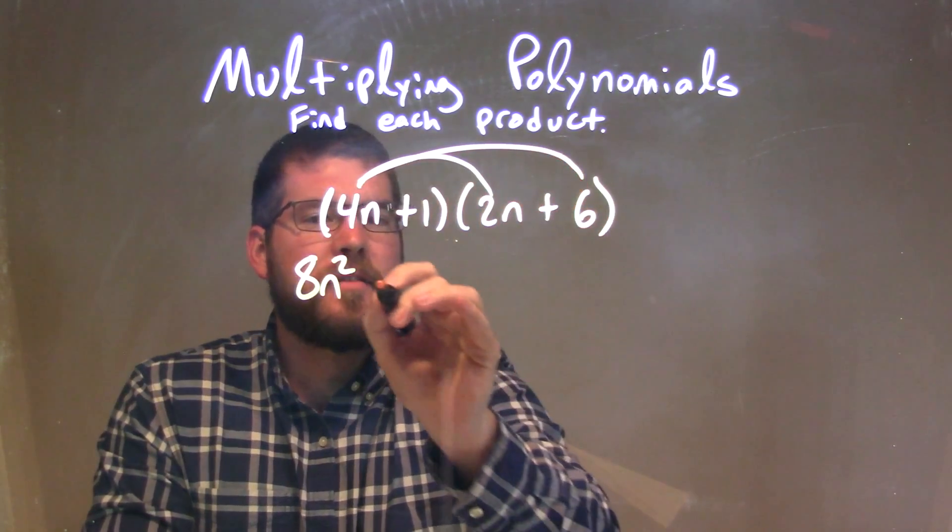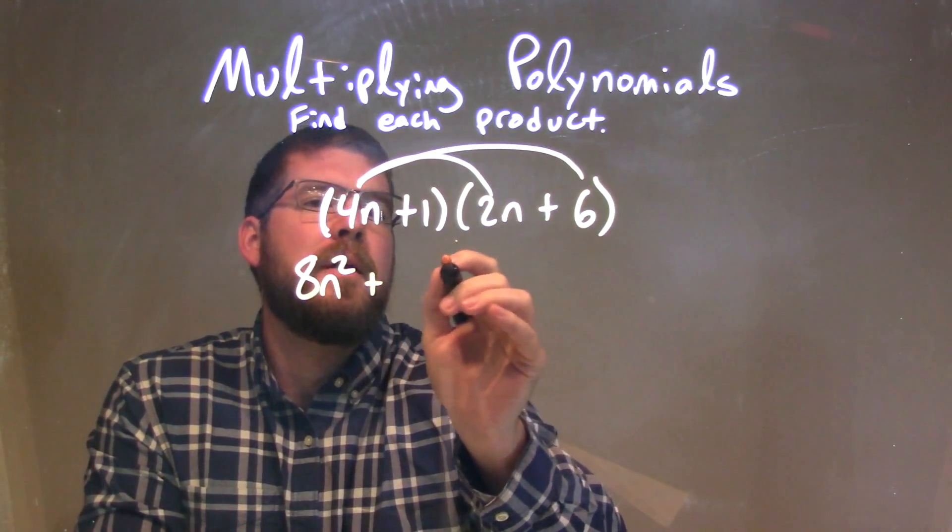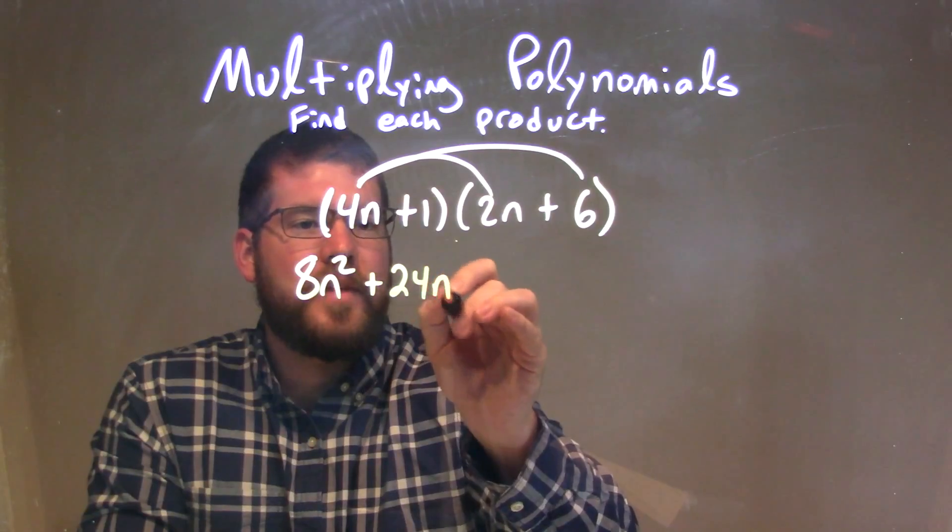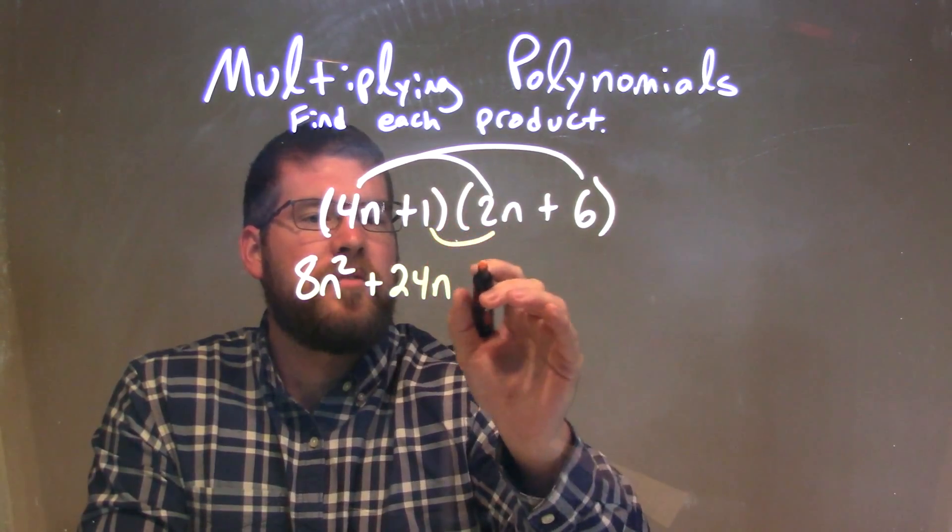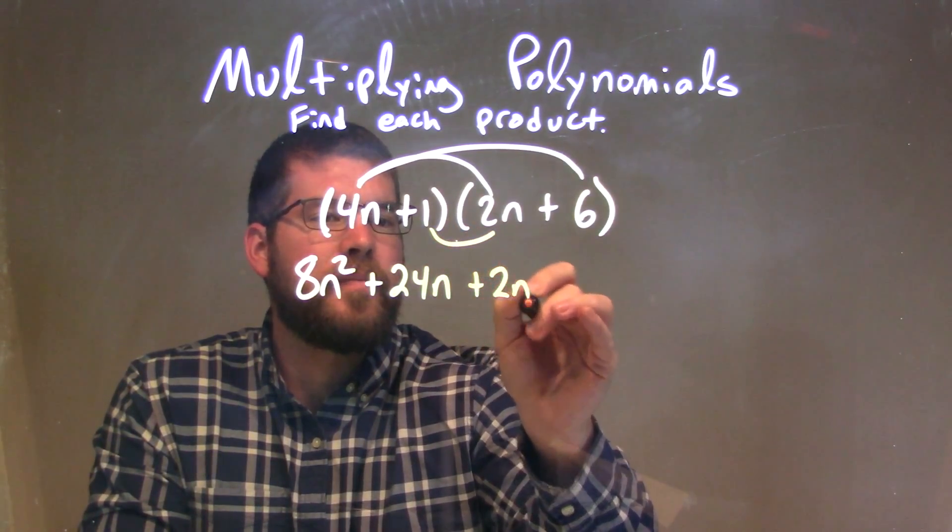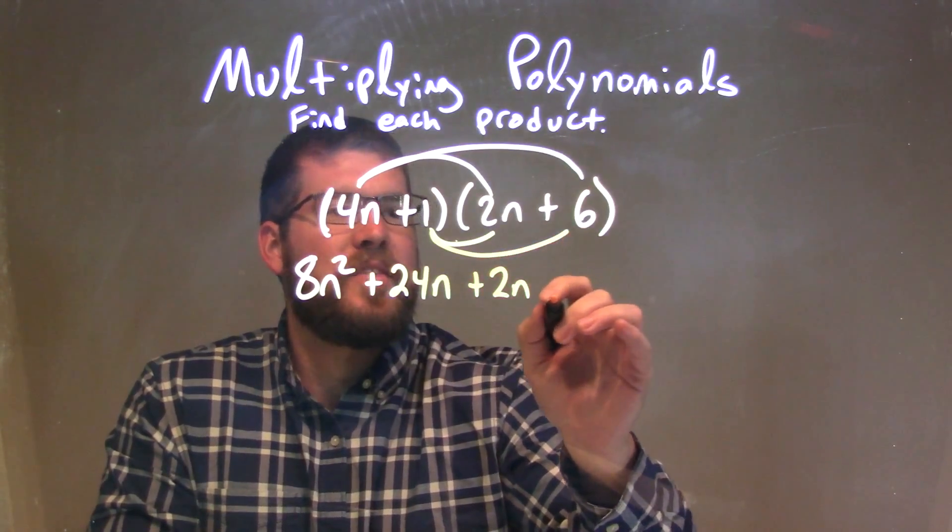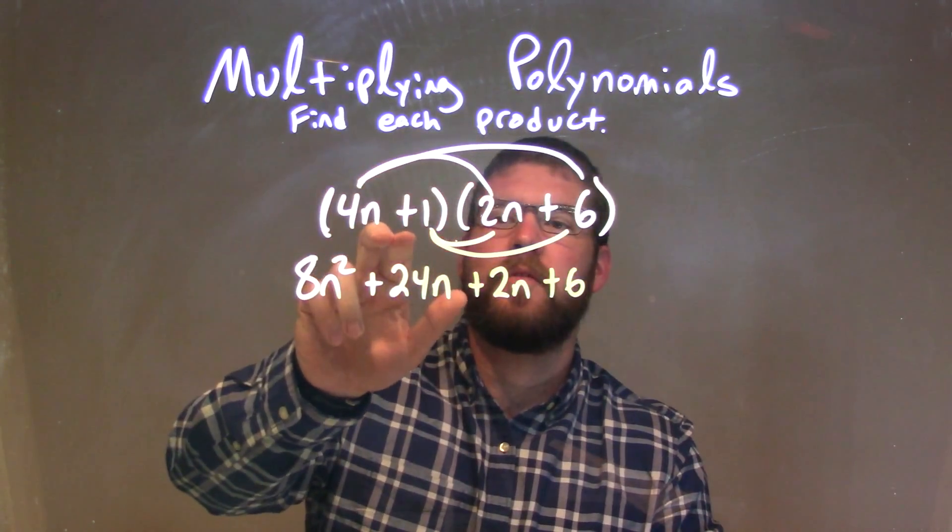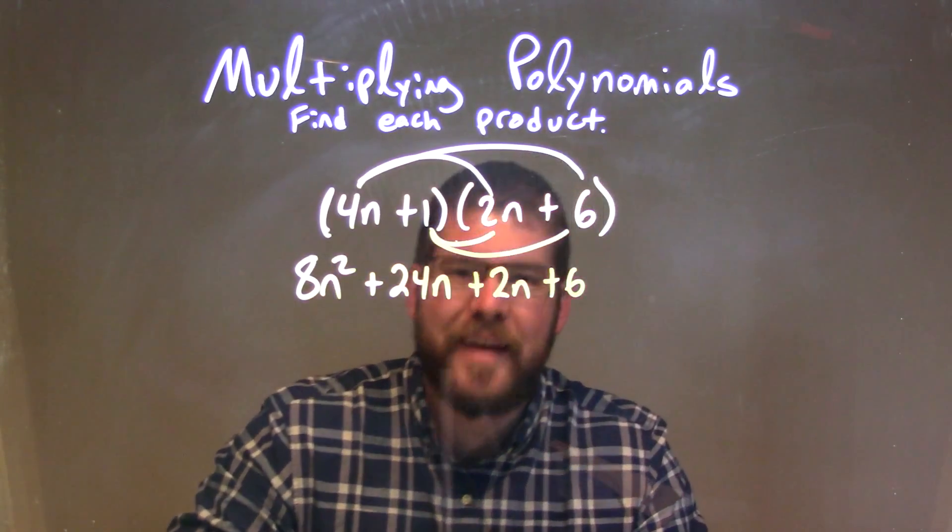4n times 6 is 24n. 1 times 2n is 2n, and 1 times 6 is 6. So now I've multiplied all parts of my first parentheses by all parts of my second parentheses.